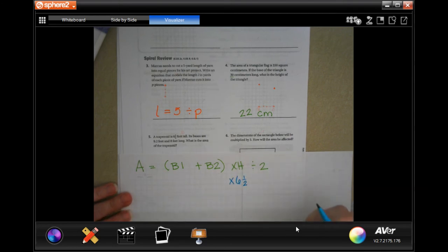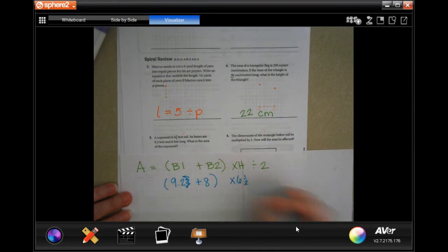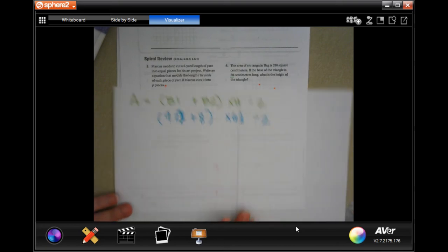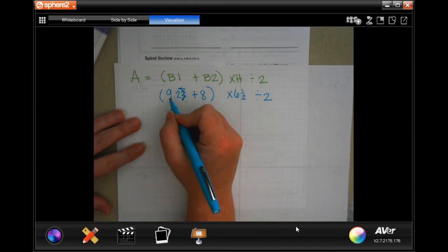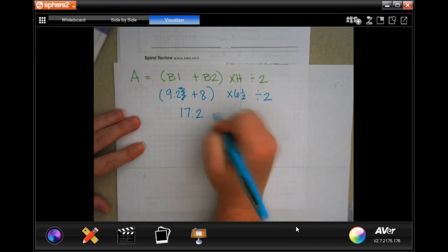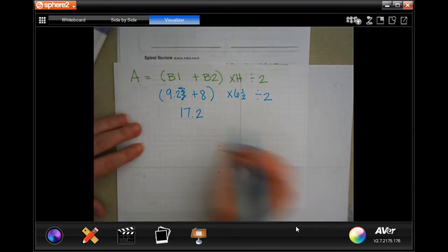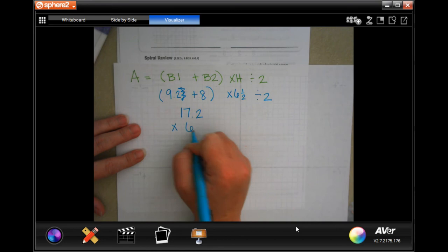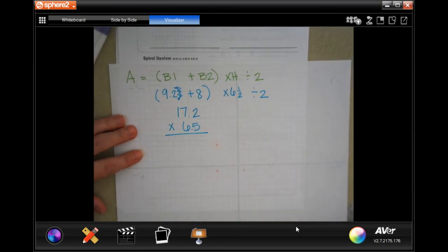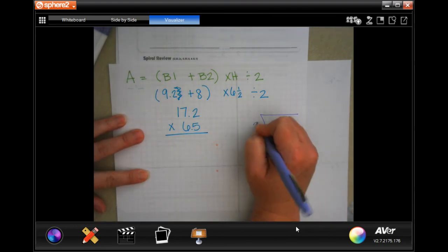Okay? I'm going to fill in what it's giving me. Okay? So it's telling me that the height is 6 and a half feet. Okay? It's telling me that one base is 9.2 and the other is 8. Okay? And the divide by 2 stays. Okay? Okay, so now 8 plus 9 is 17 and we still have the 0.2, so 17.2. And I'm going to go ahead and make that 6.5 because 0.5 is the same thing as a half. Okay? So I'm going to multiply by 6.5. Okay? And now I'm going to multiply and then I'll divide it by 2.